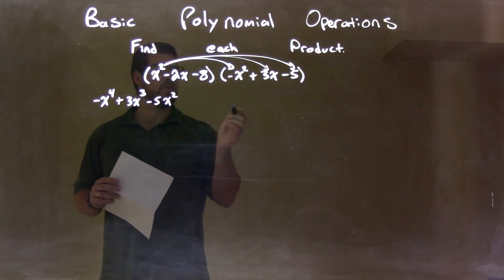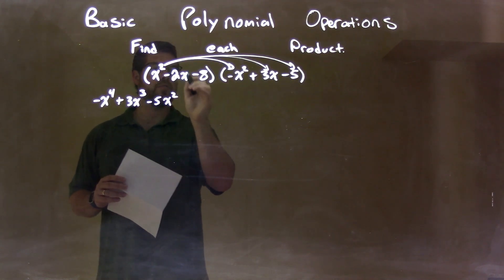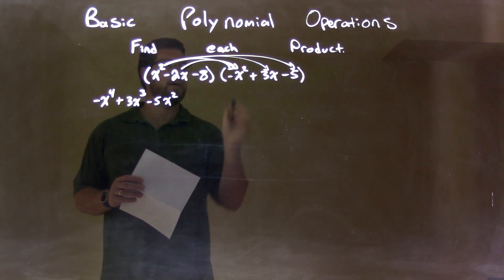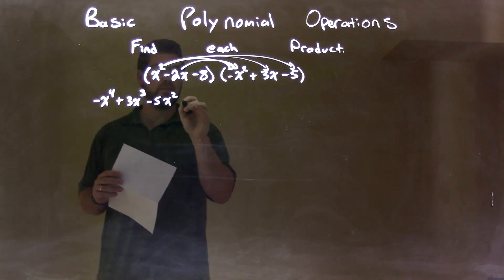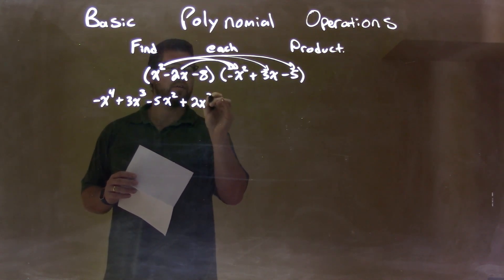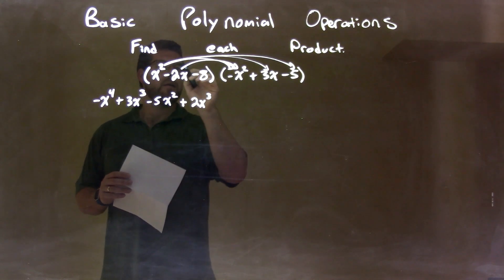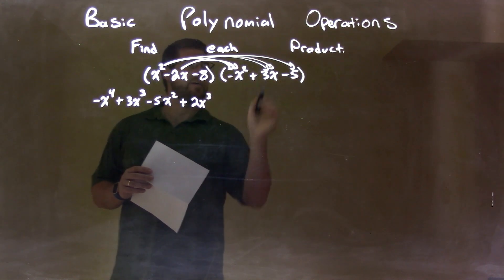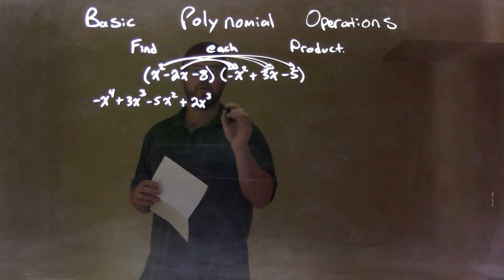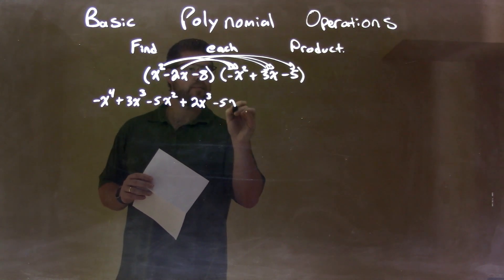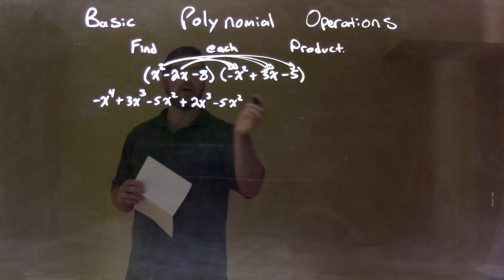Then, from there, we multiply. We finish the x squared, then negative 2x. So, negative 2x times a negative x squared is a positive 2x to the third power. Negative 2x times a 3x is a negative 5x squared. Negative 5x squared.